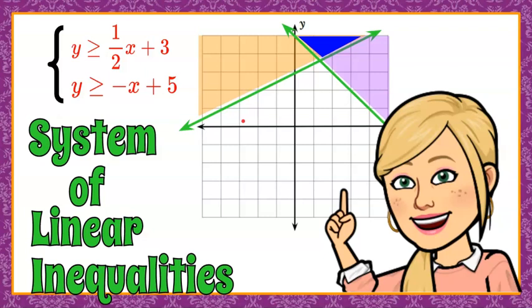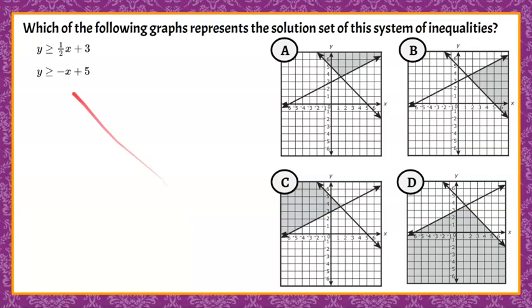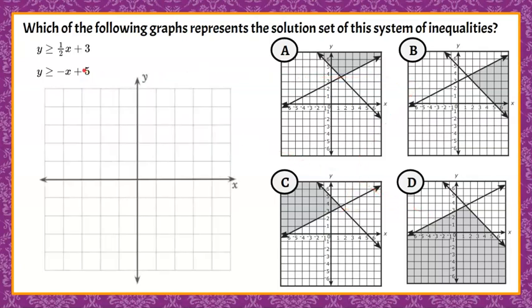Hi, welcome to the Magic of Math, where today we're going to talk about graphing a system of linear inequalities to find a solution. Here's our question. Which of the following graphs represents the solution set of this system of inequalities? And we have two inequalities written here, and we have four graphs to pick from. So we want to begin by understanding that we're going to graph this ourselves before we can even attempt to identify the solution.